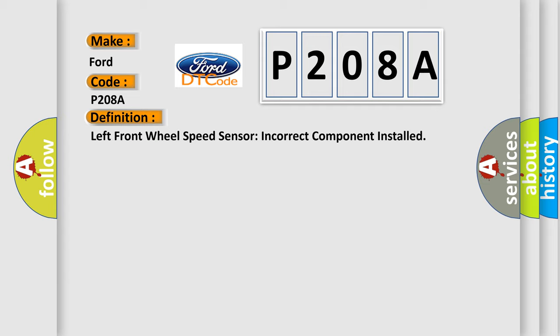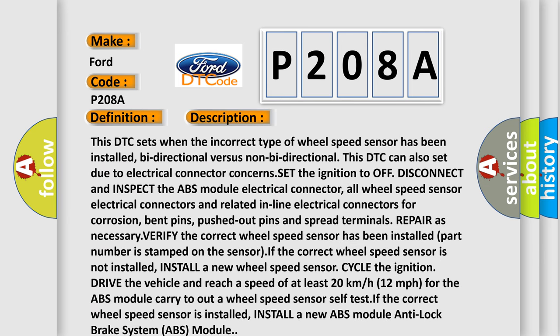And now this is a short description of this DTC code. This DTC sets when the incorrect type of wheel speed sensor has been installed, bi-directional versus non-bi-directional. This DTC can also set due to electrical connector concerns.